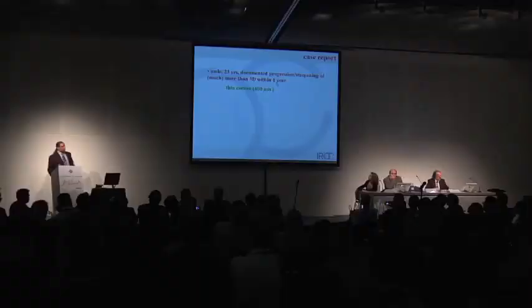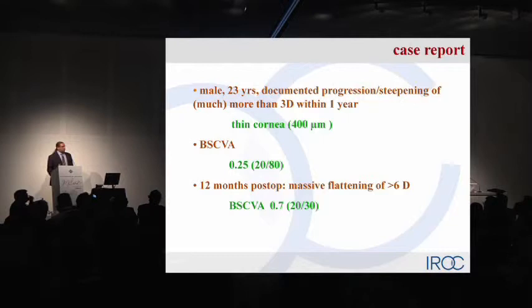We did a study in Zurich — Professor Seiler did the study, to be honest. He included regular keratoconus with no scars, no prior operations — standard indication for cross-linking. Progression was shown in those patients, age below 35 years, and best corrected visual acuity below 0.25. 36 patients completed a 12-month follow-up, an enrollment rate of 95%. For example, a 23-year-old male with progression — steepening of three diopters over one year — with a thin cornea of 400 microns and best corrected visual acuity of 0.25. At 12 months after treatment, we observed a significant flattening of about six diopters and the best corrected visual acuity improved to about 0.7, 20 over 30.